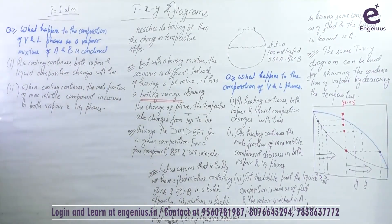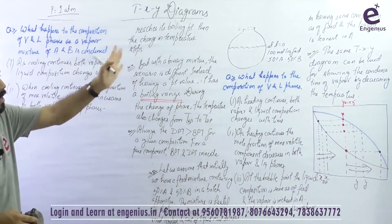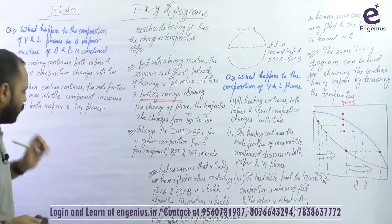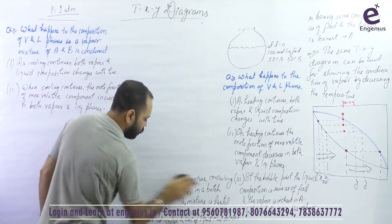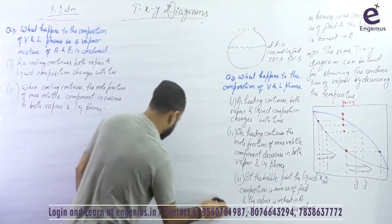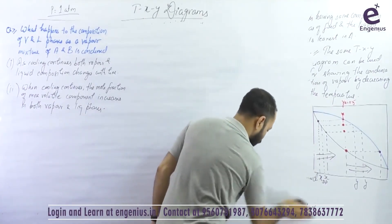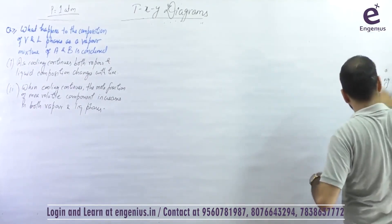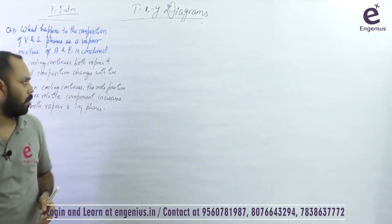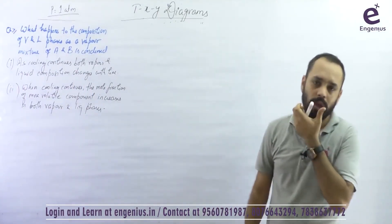Try to note everything down and understand it carefully. I also showed that condensation can be represented on the same T-X-Y diagram. There are a lot of conclusions to write. At a given temperature and pressure, there can exist only one tie line.